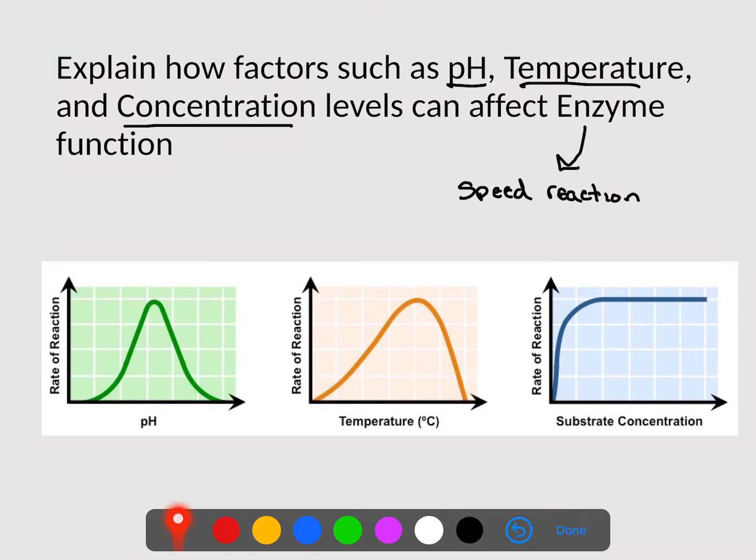So if we look here, we'll notice that pH only works at a very specific range. As we go lower or more acidic, the reaction rate decreases. As we become more basic, it decreases as well. The same thing with temperature. There's a very specific temperature that's going to work. If we go too high, it denatures. If we go too low, the reaction slows down.